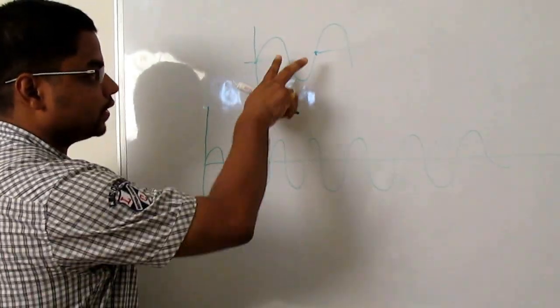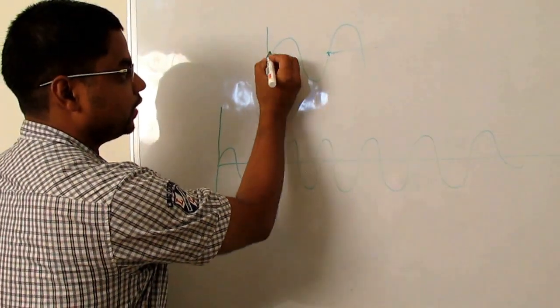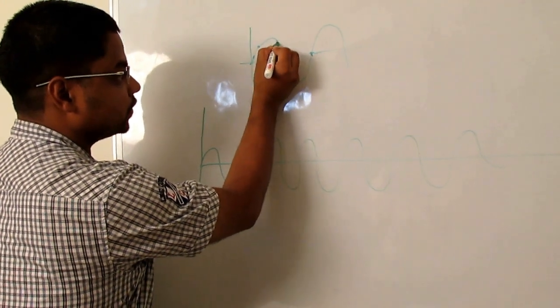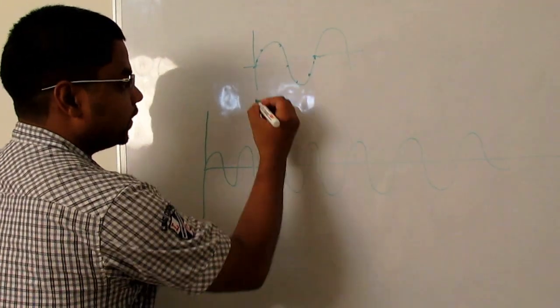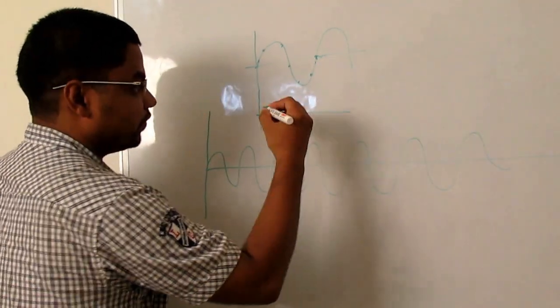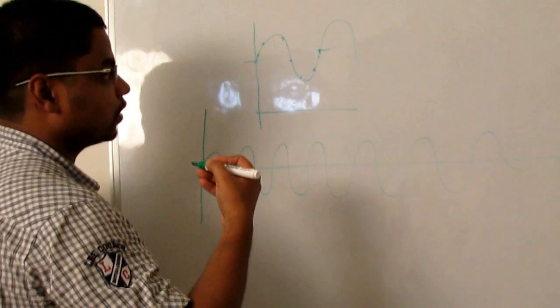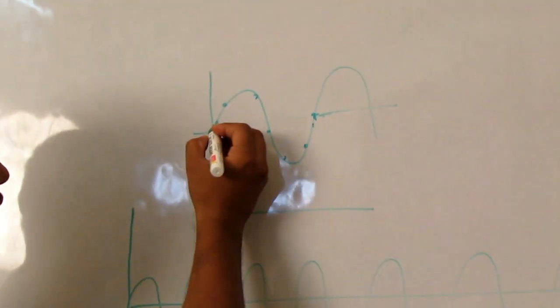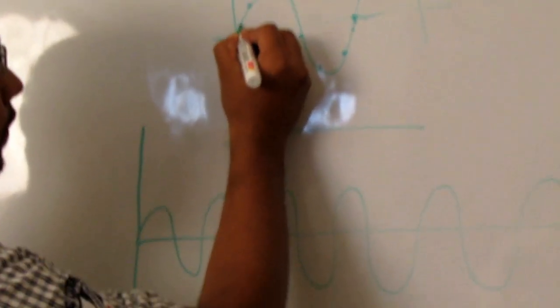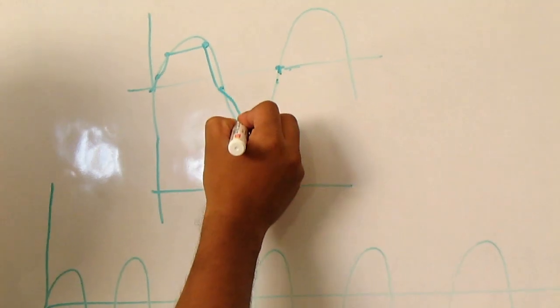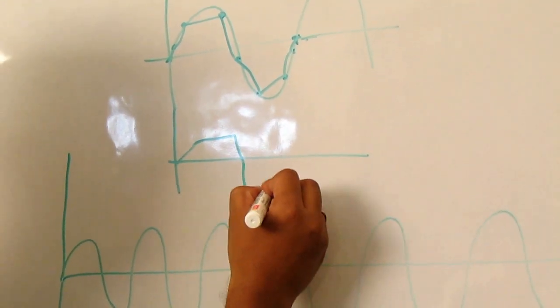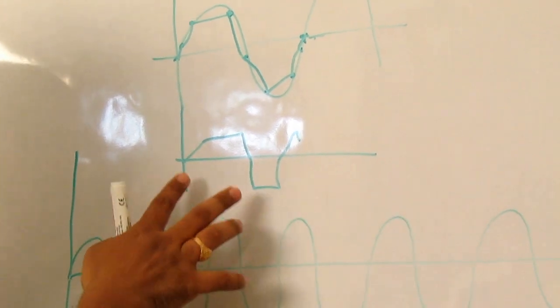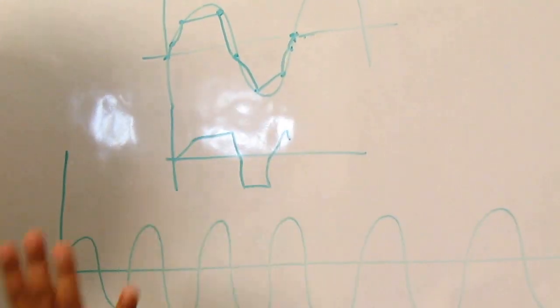Suppose I have only ten samples of this waveform, like this. Then if I have to reconstruct it or output this waveform, then what I will get here? This signal. This is no way a sine wave. Okay.